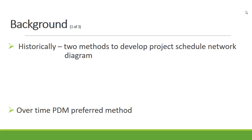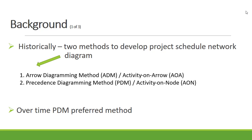Historically, two methods were developed to do the project schedule network diagram: the arrow diagramming method, also known as activity on arrow, and the precedence diagram method, also known as activity on node.